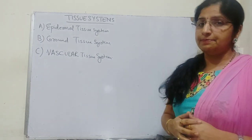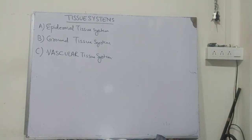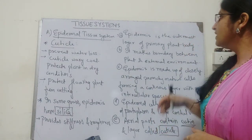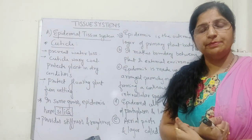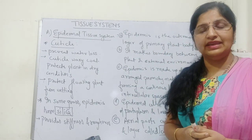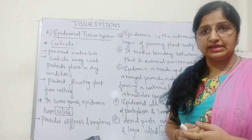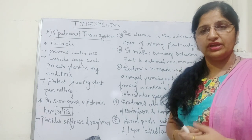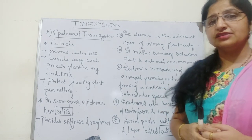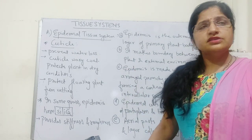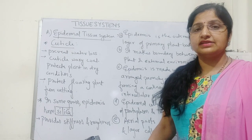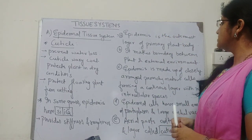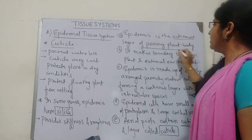Let's begin with the epidermal tissue system. Epidermis is the outermost lining of any plant body. Just as in our animal body we have the outermost lining called epidermis — our skin — which protects internal body parts from the external environment, similarly in plants there is a lining called epidermis which is the outermost layer of the primary plant body.